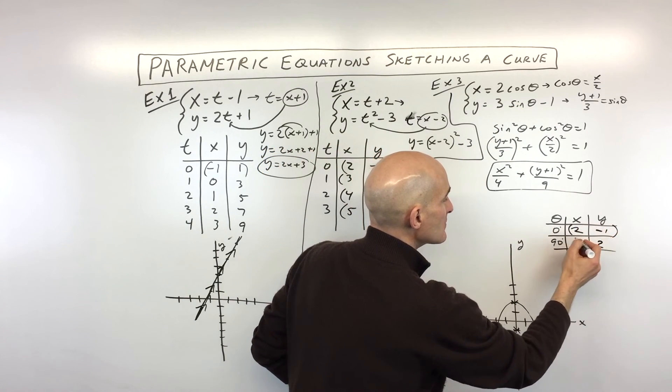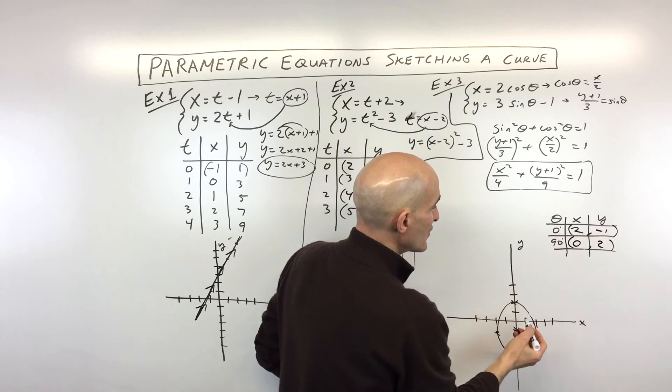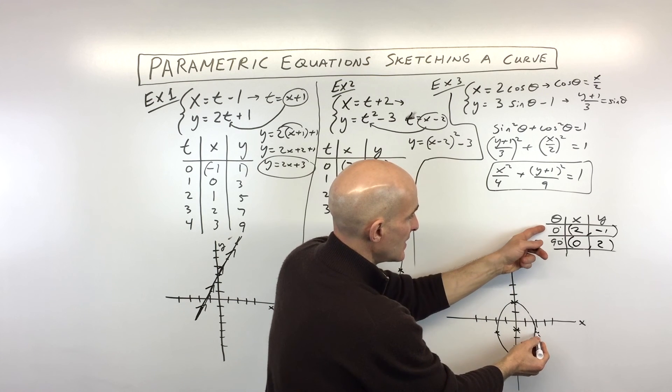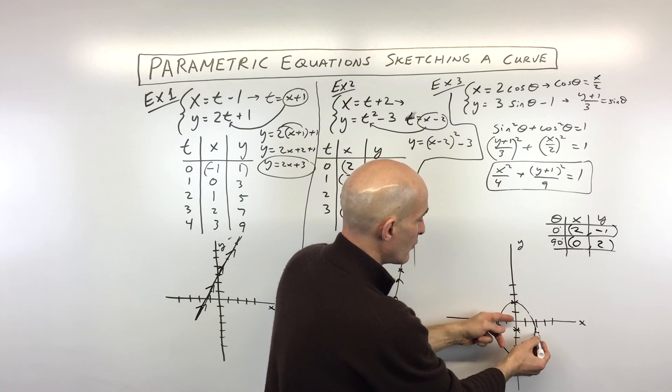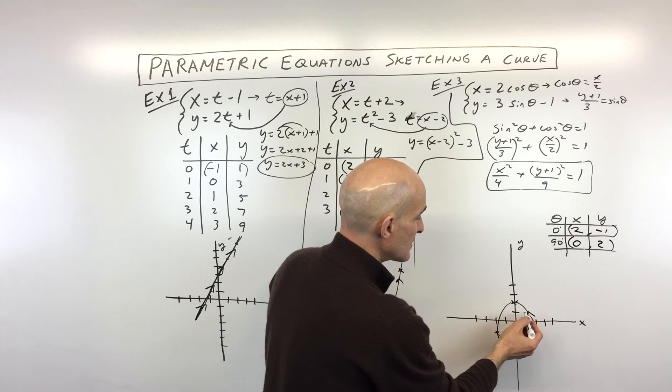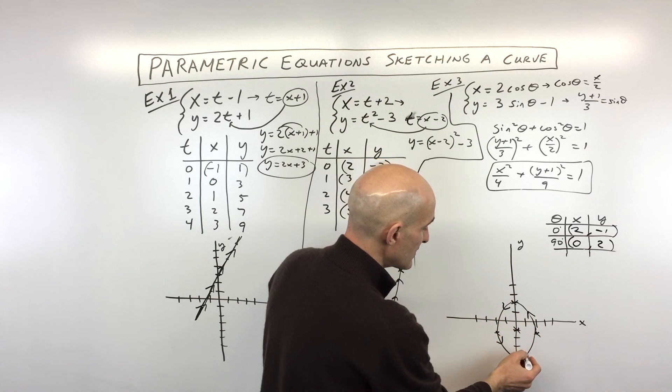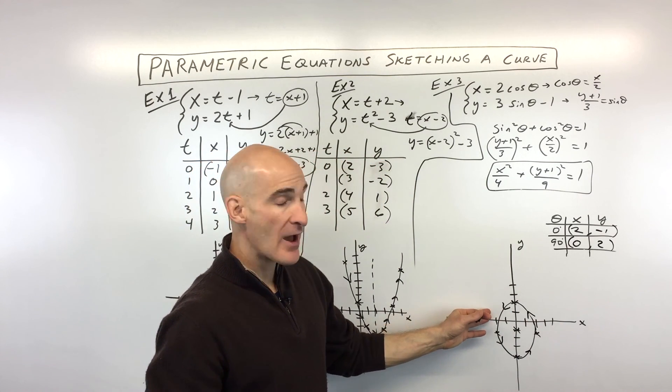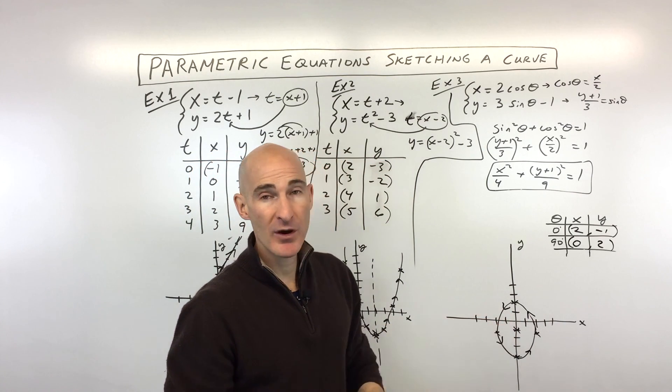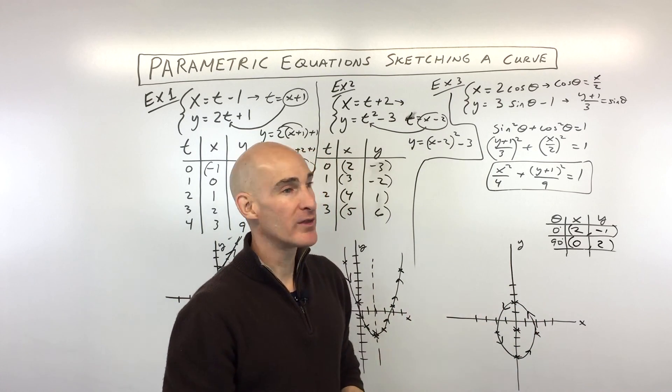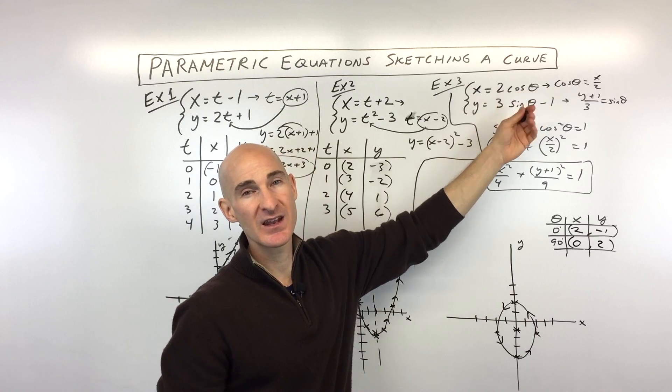So now if we plot these points, you can see we're starting at two negative one, that's this point right here. And then as theta goes to 90 degrees, we're going to be at the point zero two, that's this point here. So you can see as theta is getting larger and larger, we're going in this counterclockwise direction. So that's our graph, it's an ellipse. But what's interesting about the parametric equations is that we have an orientation, we have a direction with increasing values of our parameter. In this case, the parameter was theta.